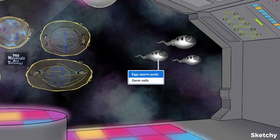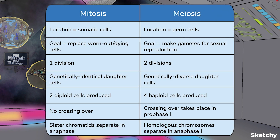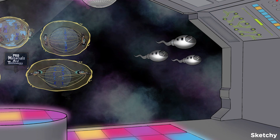To show that, we drew these egg-sperm pods. Before we hit the dance floor, here's a table that summarizes the major differences between mitosis and meiosis. Pause the video to soak it in if you need to. All right, overview over. Let's boogie into meiosis.